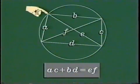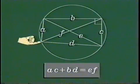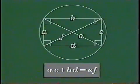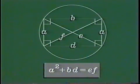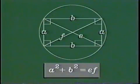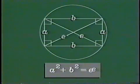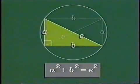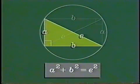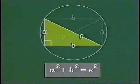Let's see what happens when the quadrilateral is a rectangle. These two opposite sides have equal length, these two opposite sides have equal length, and the two diagonals have equal length. Surprise! Ptolemy's theorem becomes the Pythagorean theorem for right triangles: the sum of the squares of the legs is equal to the square of the hypotenuse. Now we'll use Ptolemy's theorem to derive addition formulas for both the sine and cosine.